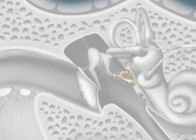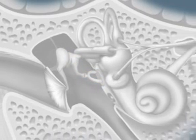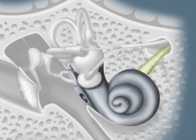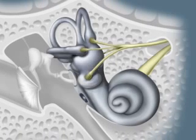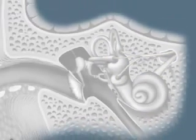The stirrup is in contact with the inner ear, which is composed of the cochlea and the cochlear nerve, as well as organs linked to balance.